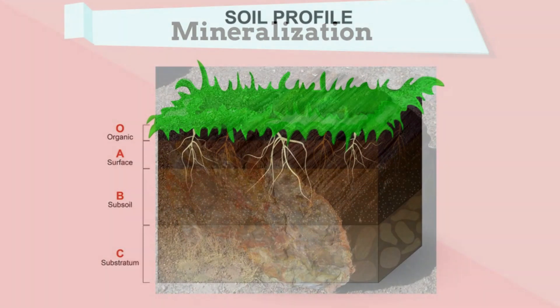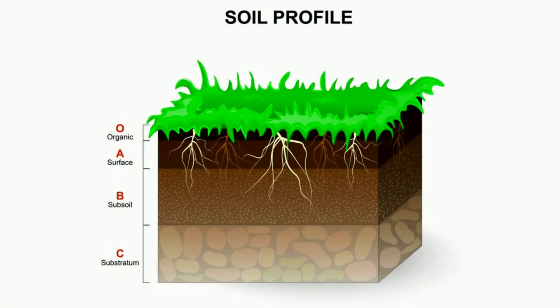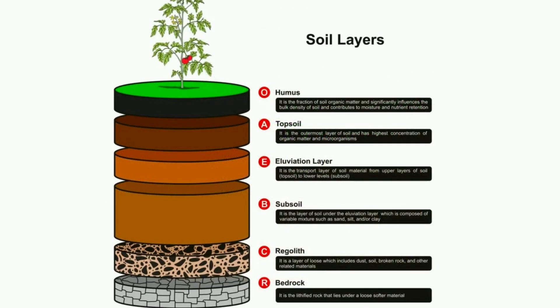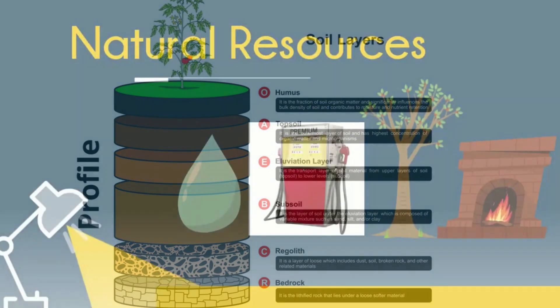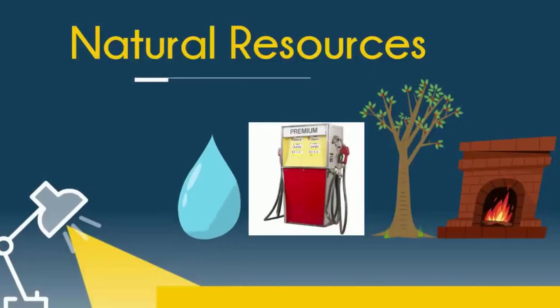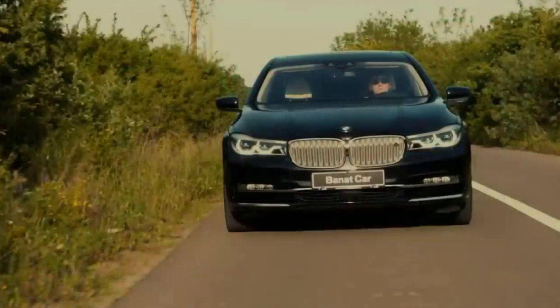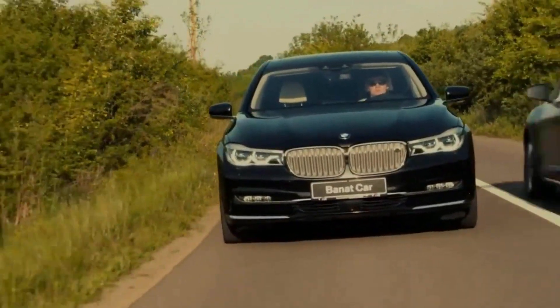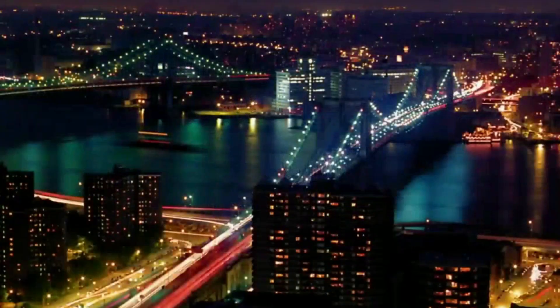Soil consists of minerals, organic matter, water, and air. And renewable resources can be naturally replenished while non-renewable resources cannot.